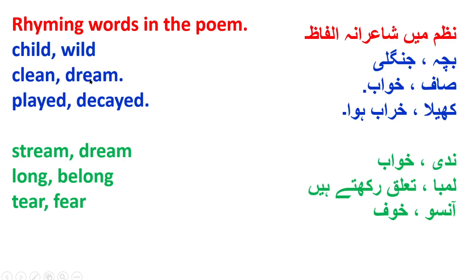پوئم میں اور rhyming words: clean اور dream — clean کا مطلب صاف، dream کا مطلب خواب۔ Played اور decayed — decayed کا مطلب خراب — جیسے دانت خراب ہو تو decayed کہتے ہیں۔ Stream اور dream — stream کا مطلب ندی، dream کا مطلب خواب۔ Long اور belong — long کا مطلب لمبا، belong کا مطلب تعلق رکھنا۔ Tear اور fear — tear کا مطلب آنسو، fear کا مطلب خوف۔